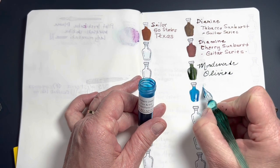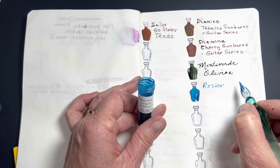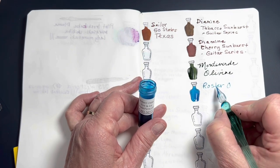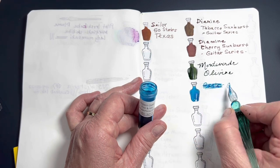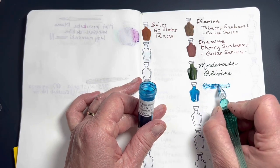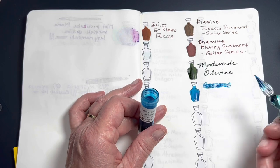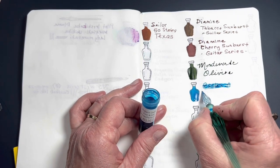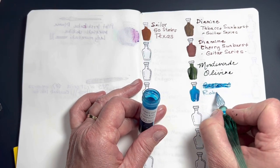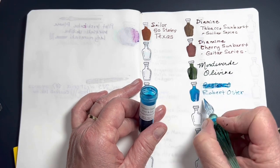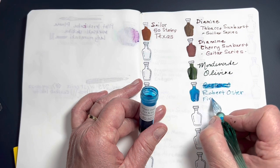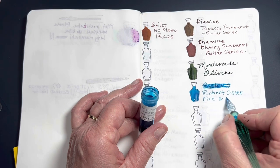All right. This is Robert Oster. Robert Oster. Oh my goodness. I can't talk and write. I just wrote Roster. Y'all laugh with me. Okay. I can laugh at myself. Robert Oster Fire and Ice. And this is a gorgeous color. Wow.